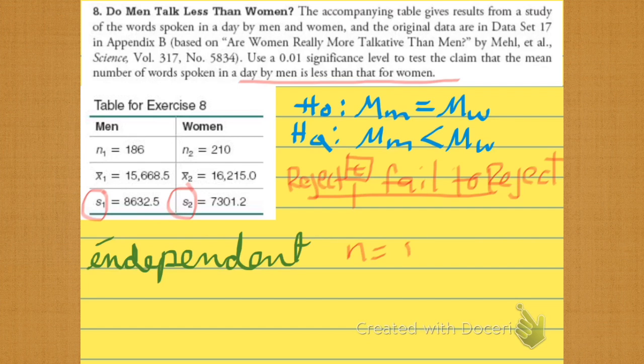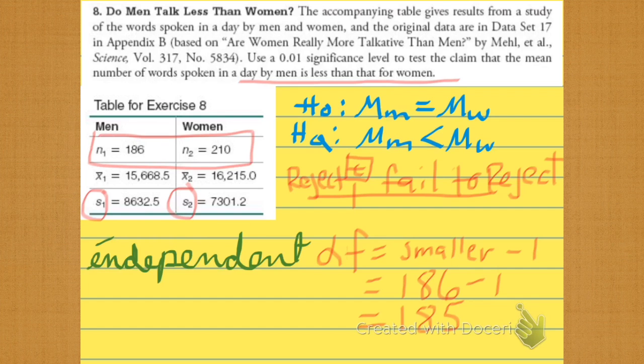So we go to our t chart and we look up the number of degrees of freedom. Okay. And for the purposes of our book, it's the smaller one. Which one's smaller, 186 or 210? There is an official one, but this is for an intro stat class. So the degrees of freedom are 186 minus 1, which is 185.